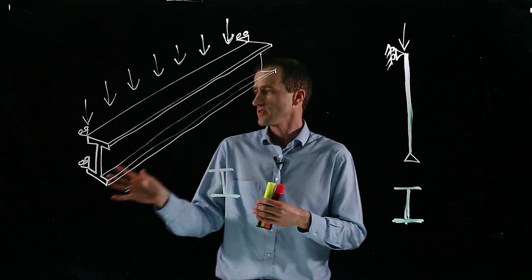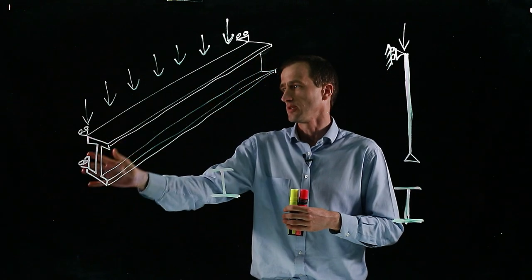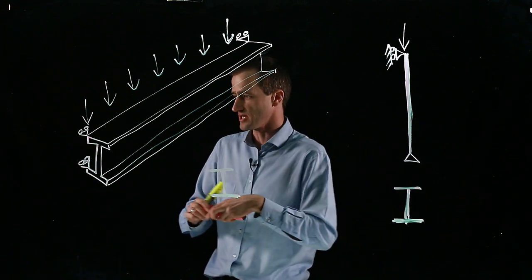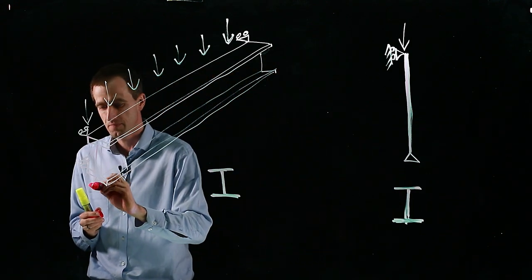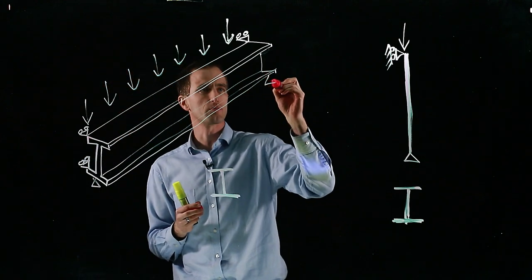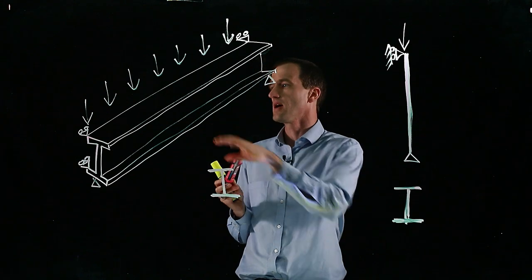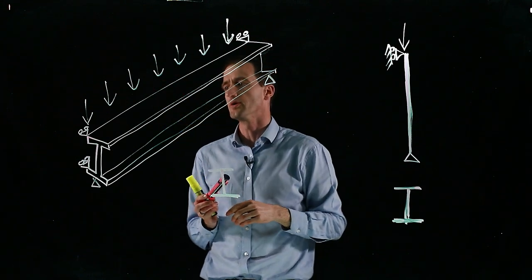But we're going to start out just having a look at a steel beam with a load on it. And this is spanning between two supports on each side, so it's supported there and supported there. Isometric view: simply supported steel beam carrying a distributed load on top of it.